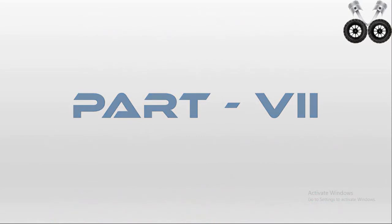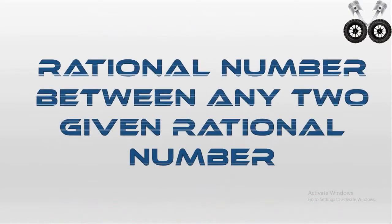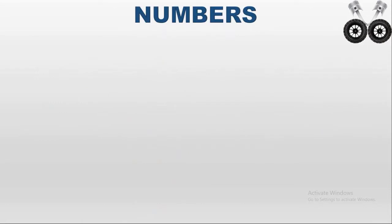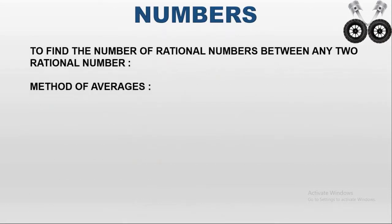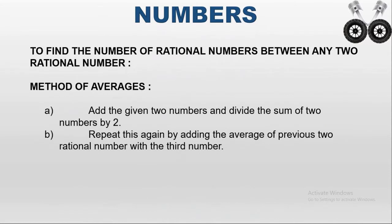Part 7: Rational numbers between any two given rational numbers. Here we are going to find the in-between rational numbers between two given rational numbers. There are two methods for finding the in-between rational numbers.